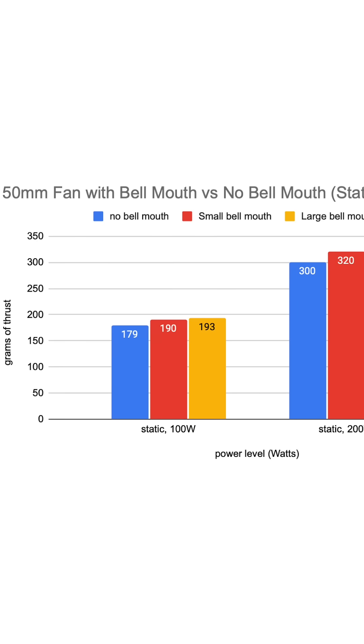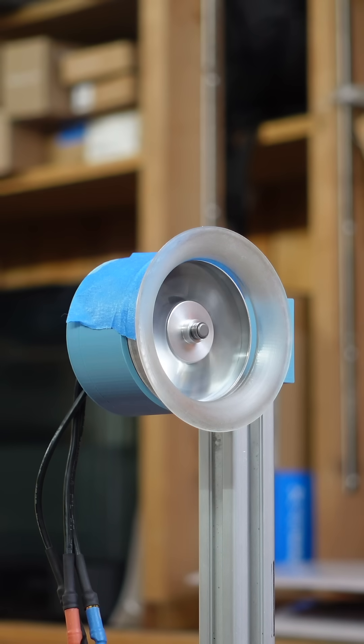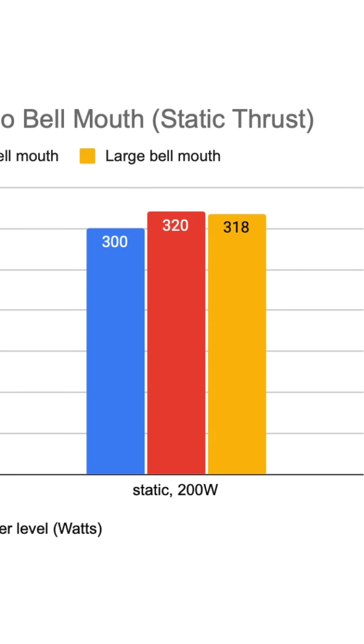At 100 watts, the large bellmouth makes 14 grams of thrust more than the bare fans. That's a 7.8% improvement. The small bellmouth led to a 6.1% increase in thrust over the bare fan. At 200 watts, the small bellmouth was actually the most efficient with a 6.6% improvement over the bare fan.